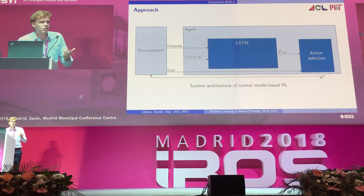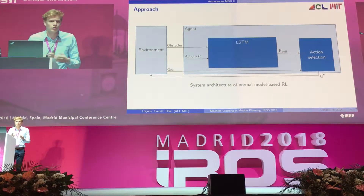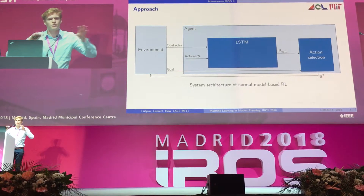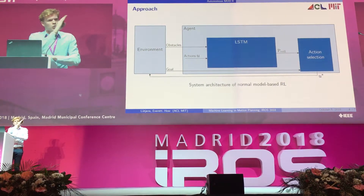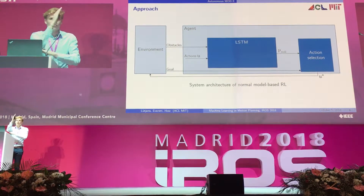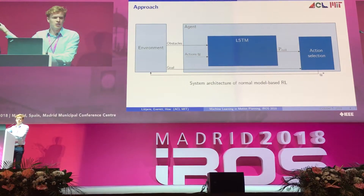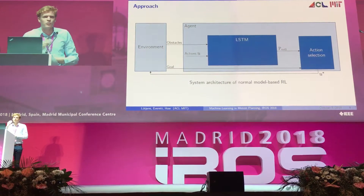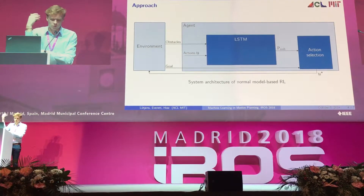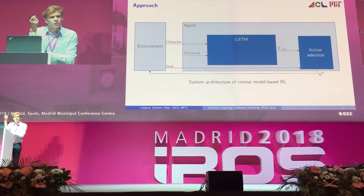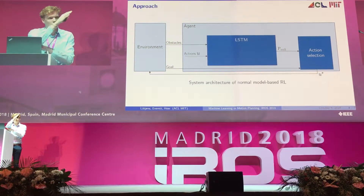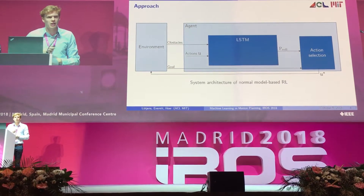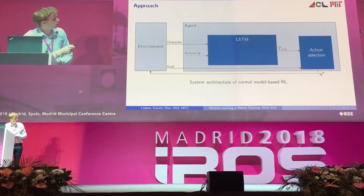A traditional model-based framework for collision avoidance looks like this: there are many obstacles in the environment and a set of action possibilities is evaluated to avoid them. An LSTM predicts for each action possibility the probability that the action would result in a collision with an obstacle, and the safest action is taken.